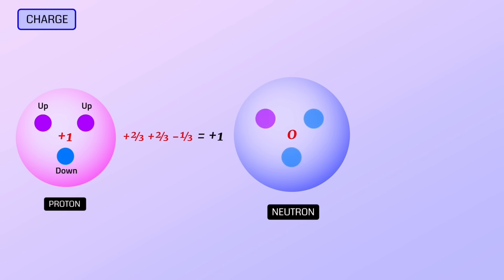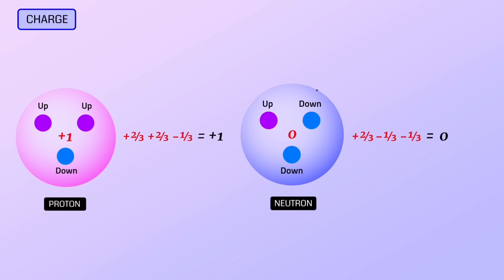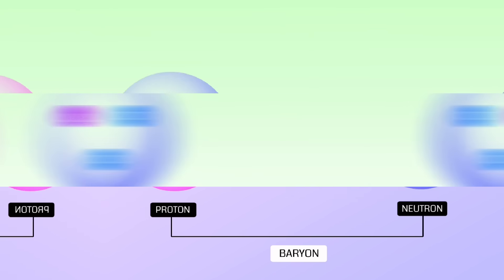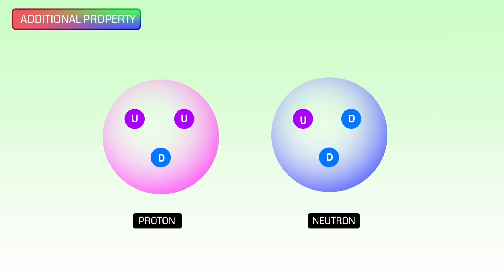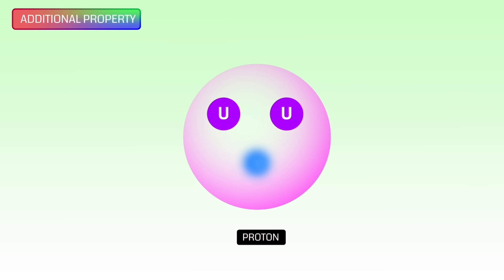Similarly, a neutron is composed of one up quark and two down quarks, and the combination of charges — minus one-third, minus one-third, plus two-thirds — totals zero. So the neutron comes with neutral charge. The combination of three quarks is called a baryon. Therefore, protons and neutrons are baryon particles. Now we can see that the same flavor of quarks can exist in a single baryon particle — for example, a proton has two up quarks. To distinguish them, an additional property comes into play: the color charge property.